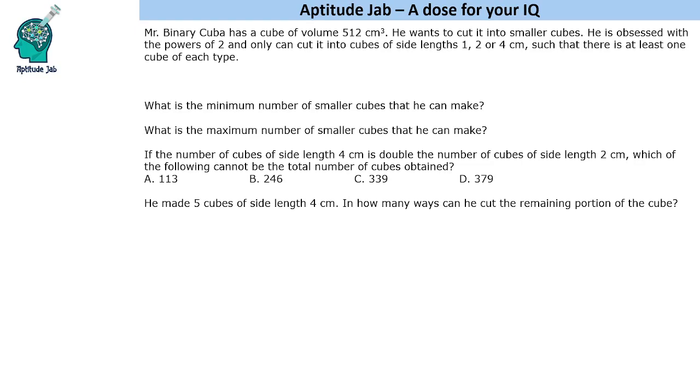Hello everyone, welcome to AptitudeJab. This set says that there is a person named Binary Cuba. He has a cube of volume 512 cm cube. He wants to cut into smaller cubes and he can cut only in cubes of side lengths 1, 2 or 4 cm such that there is at least one cube of each type.